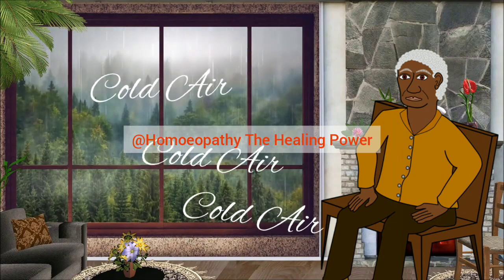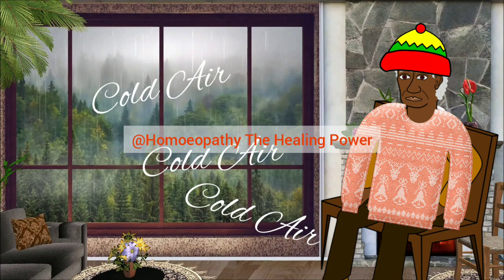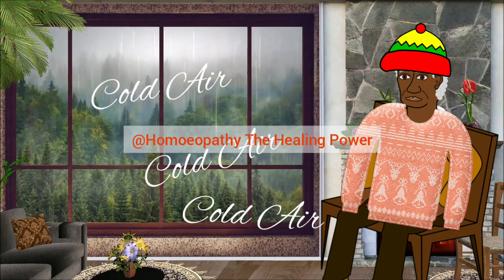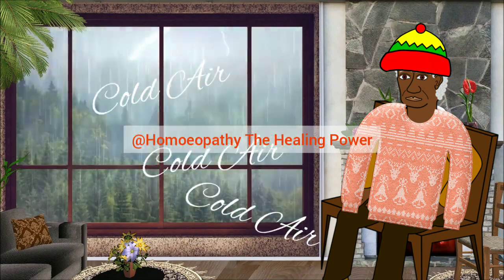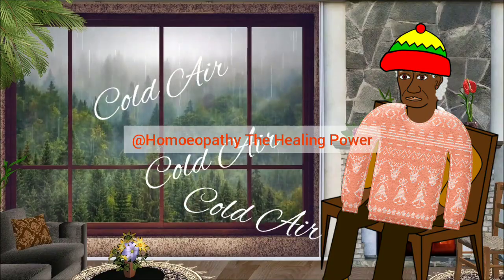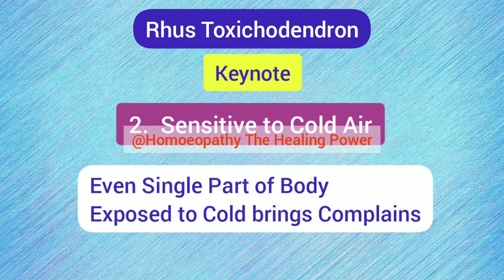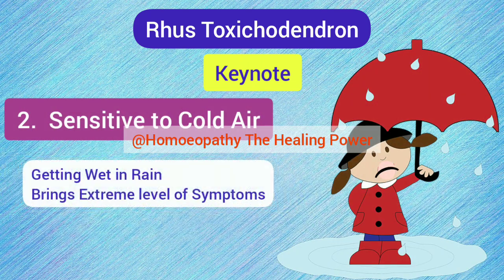The patient is so sensitive to cold air that even when the sky becomes cloudy, the patient puts on warm clothes as a precaution. This sensitiveness is so extreme that even when a single part of the body is exposed to cold air, the symptoms get started or aggravated. But when the patient gets wet in rain, this brings the extreme level of troubles in the Rhus Tox patient.